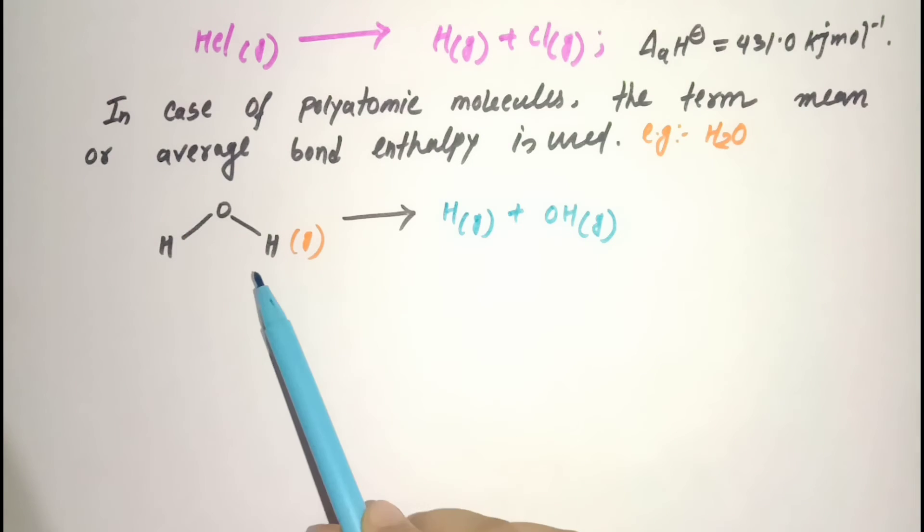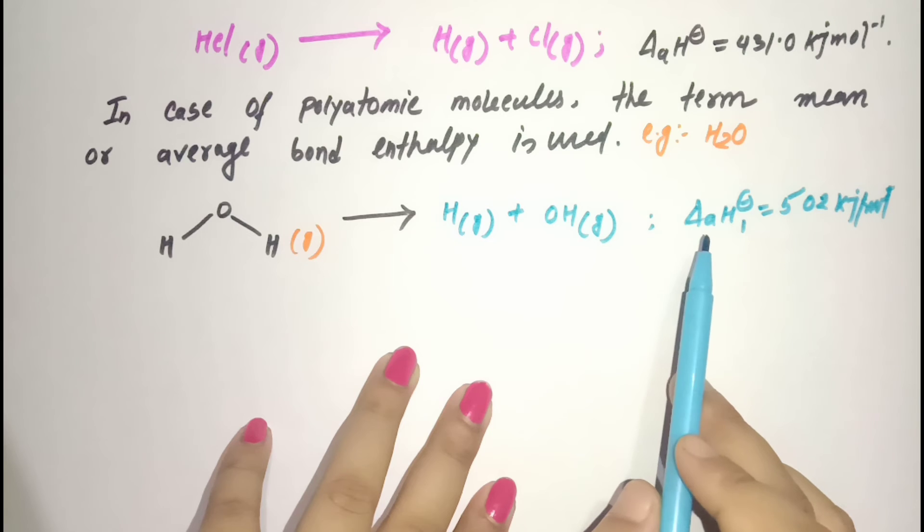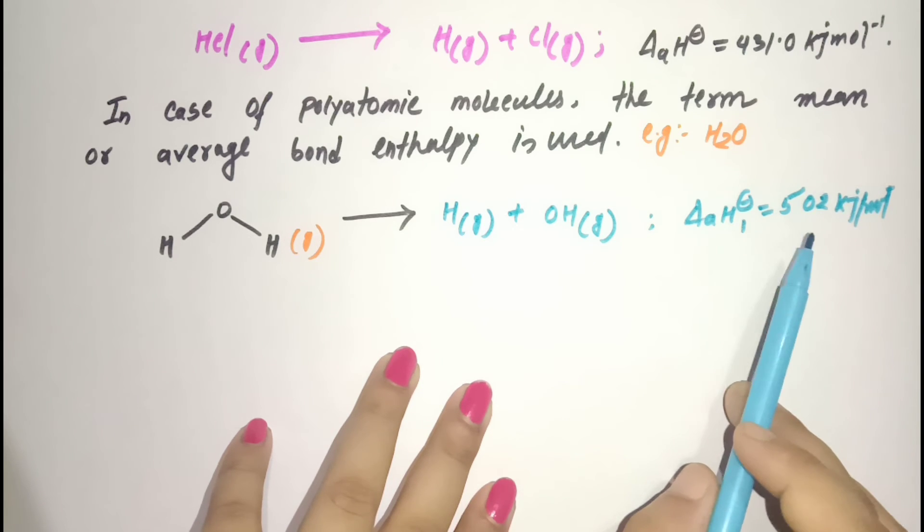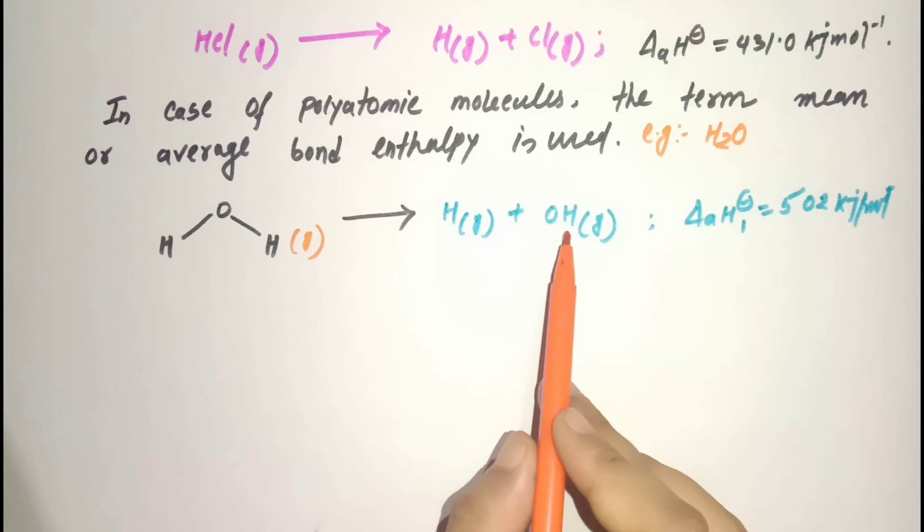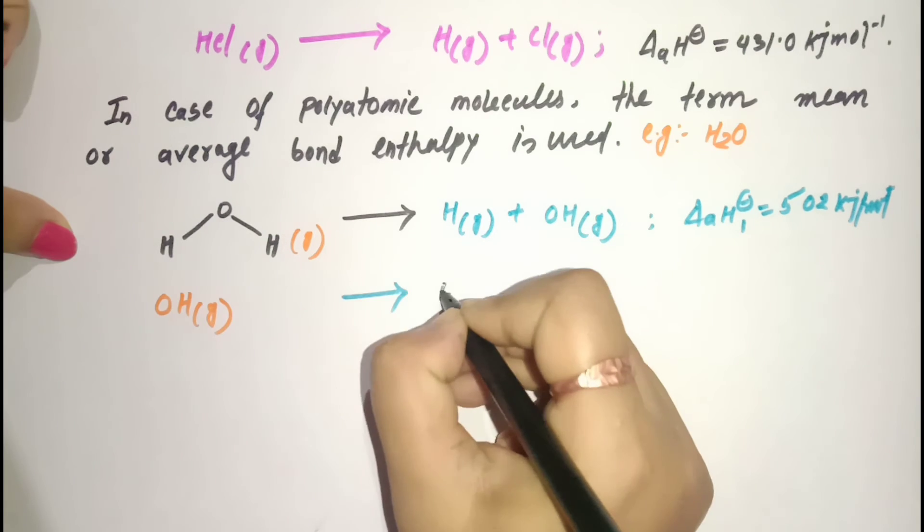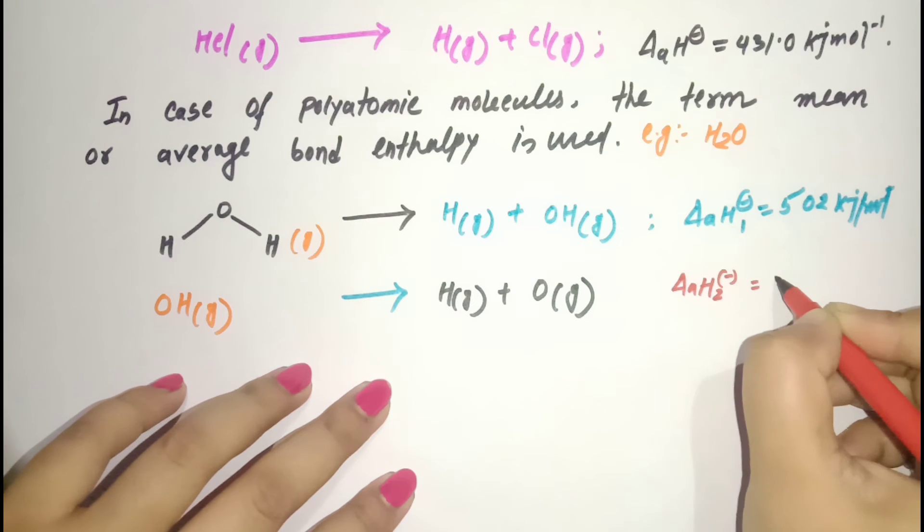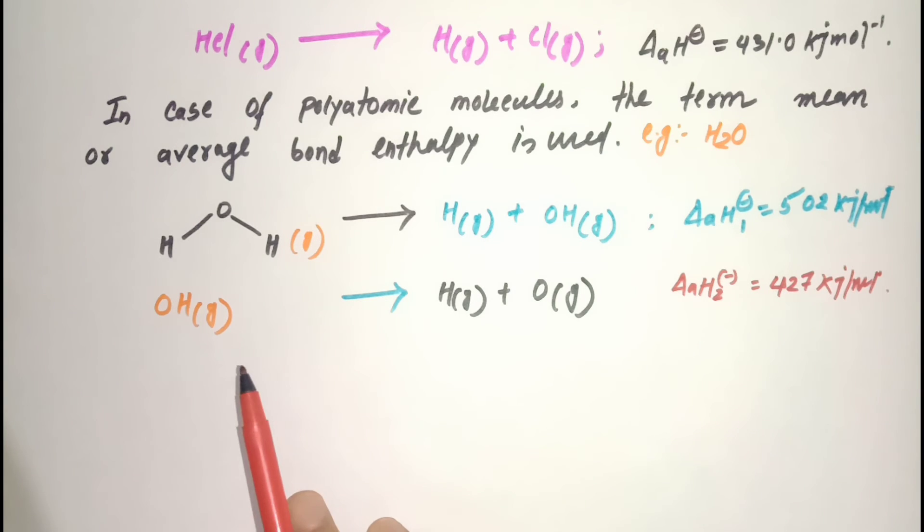In the first step, when one O-H bond breaks in the water molecule leaving OH and H, the bond dissociation enthalpy is 502.0 kJ per mole. In the second step, when the OH group breaks into hydrogen and oxygen atoms, the energy required is 427 kJ per mole. The difference in atomization enthalpy values shows that the second O-H bond undergoes some changes because of changing chemical environment.